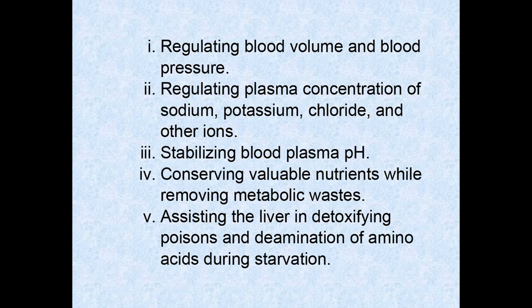This includes secreting erythropoietin and releasing renin, regulating plasma concentration of sodium, potassium, chloride, and other ions by influencing their quantities in urine. The kidneys also control calcium ion levels through the synthesis of calcitriol, stabilize blood pH by controlling concentrations of hydrogen and bicarbonate ions in urine, conserve valuable nutrients by preventing their loss in urine while removing metabolic wastes such as urea and uric acid, assist the liver in detoxifying poisons, and during starvation support deamination of amino acids. These activities are carefully regulated to keep blood composition within acceptable limits, and a disruption of any one of them can be fatal.